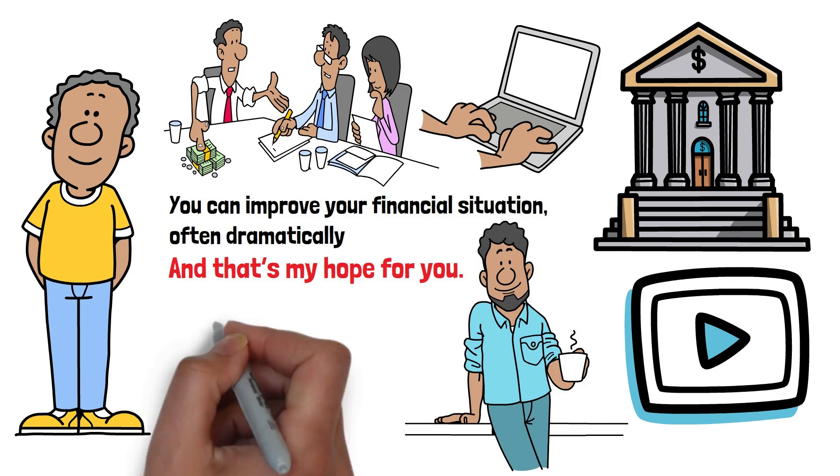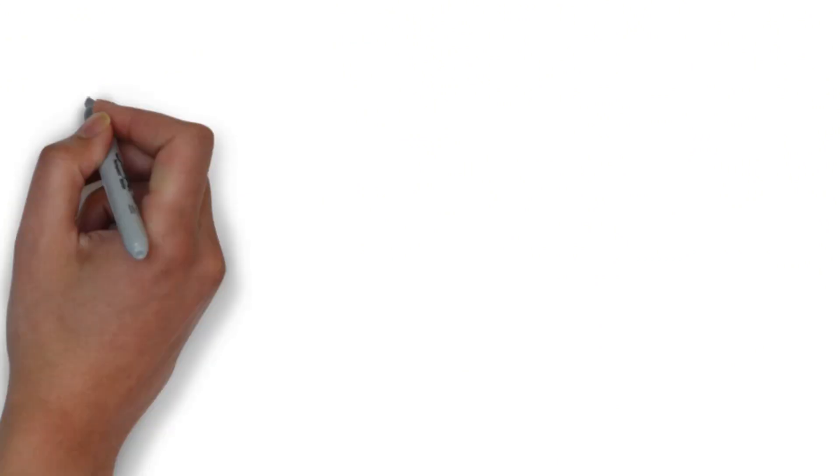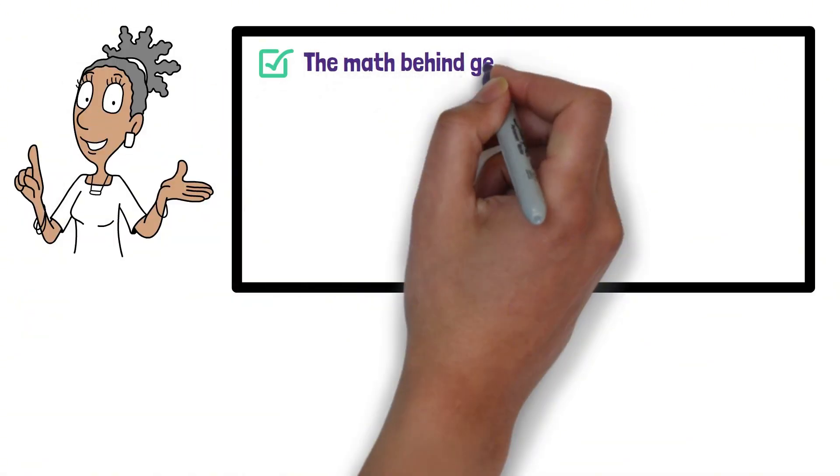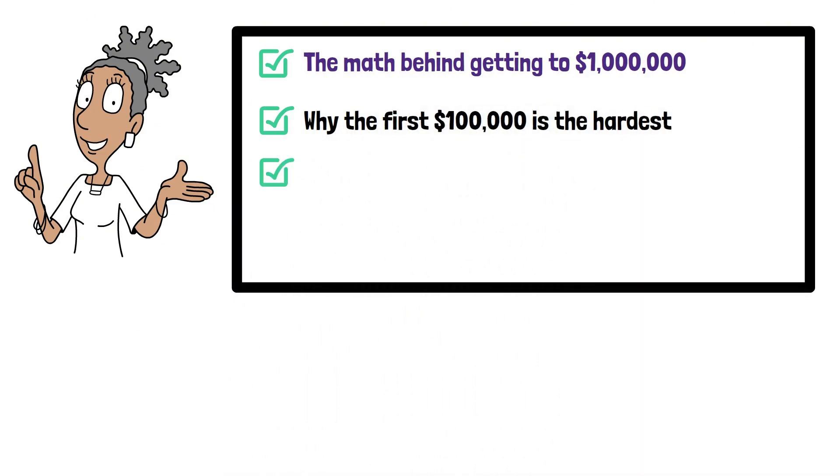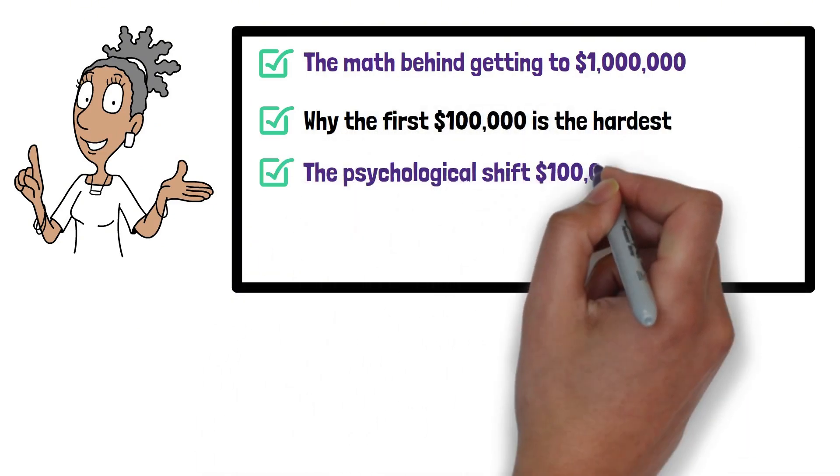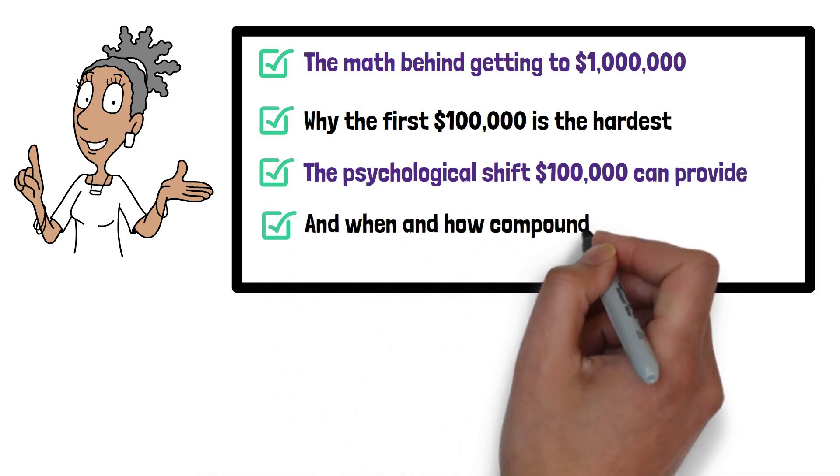And if you want to get control of your finances, I put a link to a Financial Fundamentals Bundle in the description that may help. Here's what we'll cover today: the math behind getting to $1 million, why the first $100,000 is the hardest, the psychological shift $100,000 can provide, and when and how compounding flips the game in your favor.